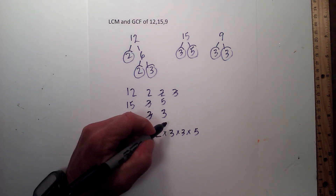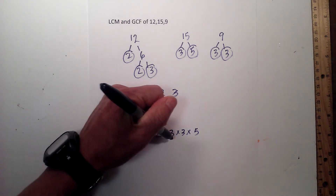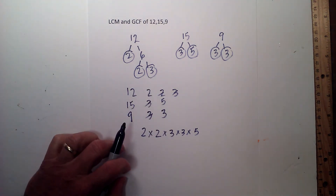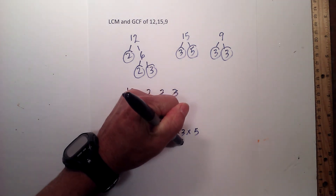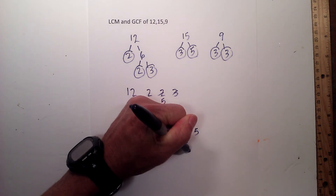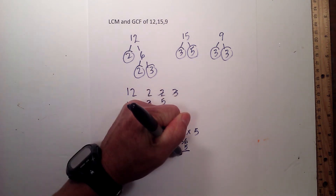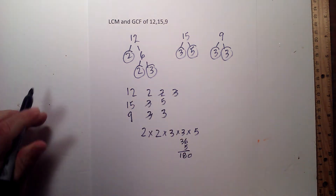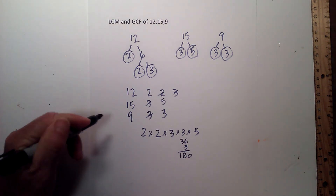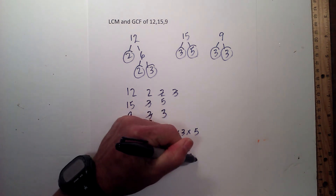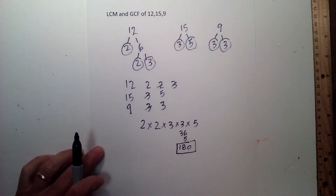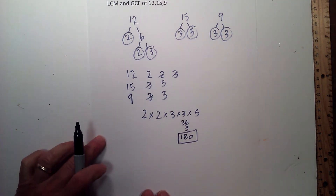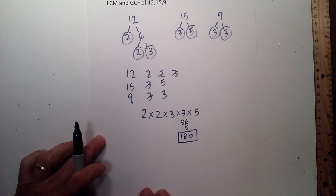Now I will multiply these out: 2 times 2 is 4, 4 times 3 is 12, 12 times 3 equals 36, and 36 times 5 equals 180. So the LCM is 180.